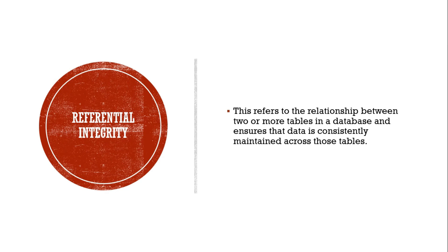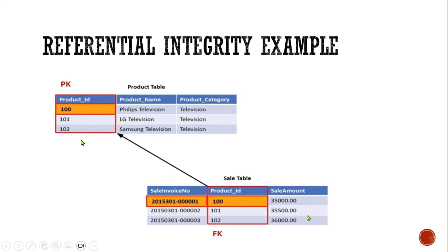The third type is referential integrity in a SQL database. This refers to the relationship between two or more tables and ensures that data is consistently maintained across those tables. Referential integrity ensures that a foreign key value in one table corresponds to a valid primary key value in another table. This helps maintain consistency by preventing the creation of orphan records, which is essential for accurate data analysis and decision making. For example, the product table has a primary key of product ID, and the sale table has a foreign key of product ID referencing the product table. The database will ensure that a sale invoice can only be entered if it corresponds to a valid product ID in the product table.